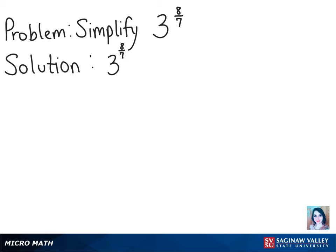The first thing we can do to simplify this problem is break up the fractional exponent. We can rewrite this as 3 raised to the power of 1 plus 1/7. When we're adding exponents, that really means we're multiplying with the same base. So we can rewrite this as 3 to the 1st power times 3 to the 1/7 power.